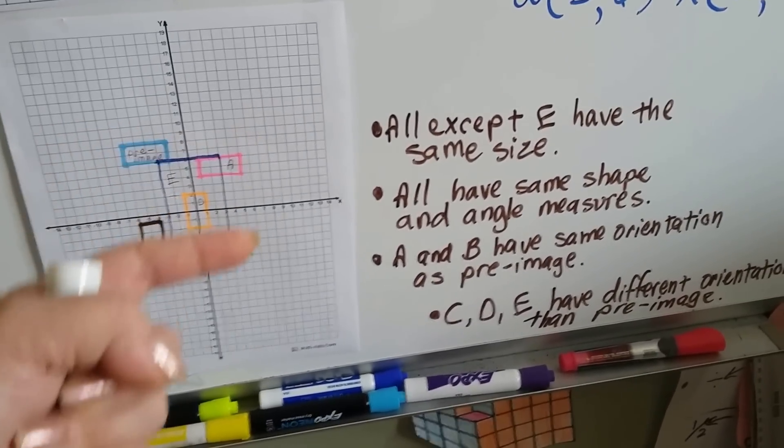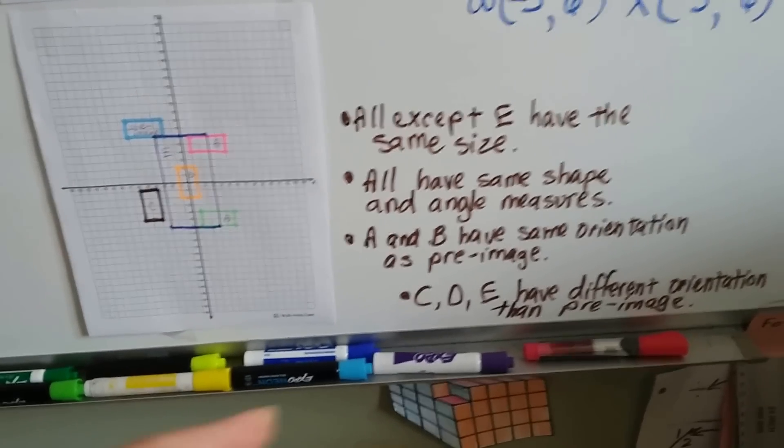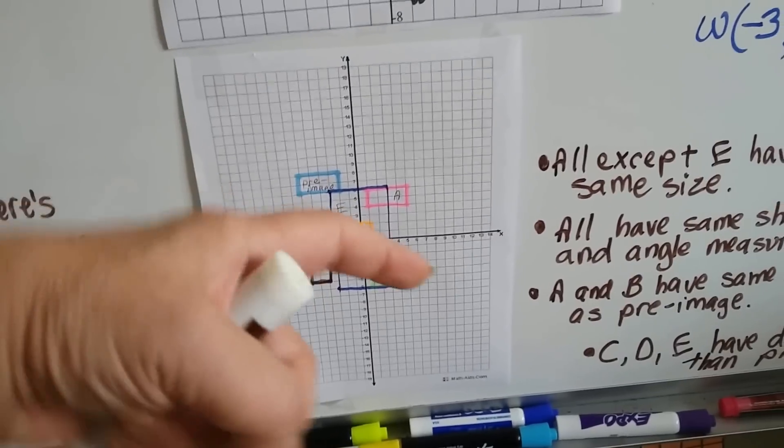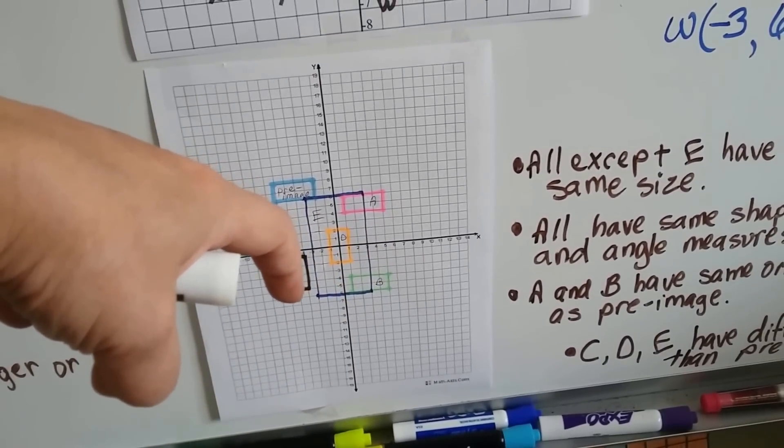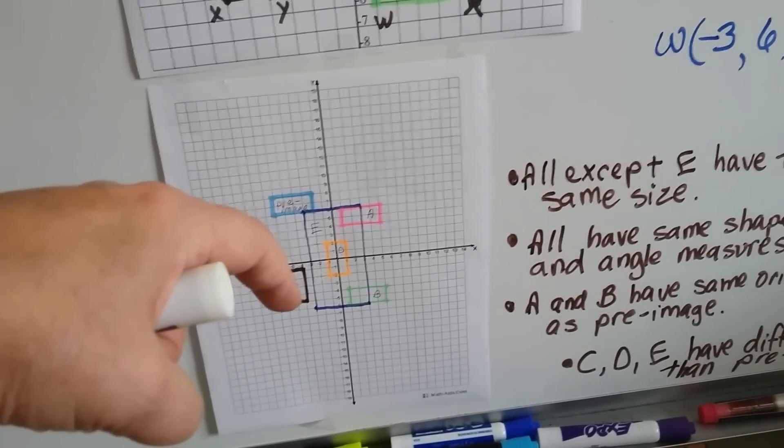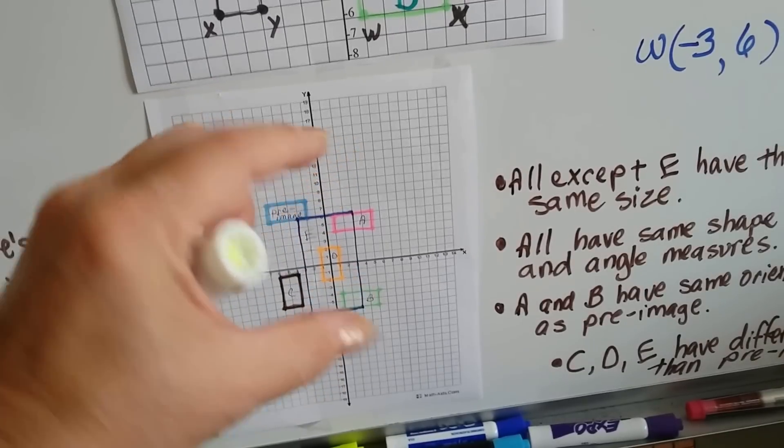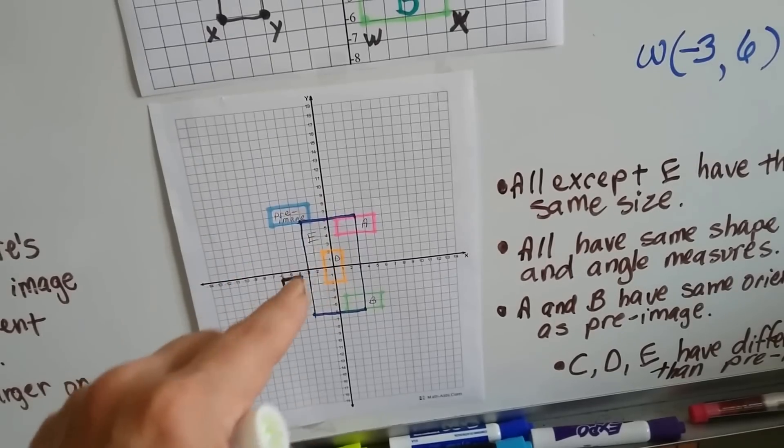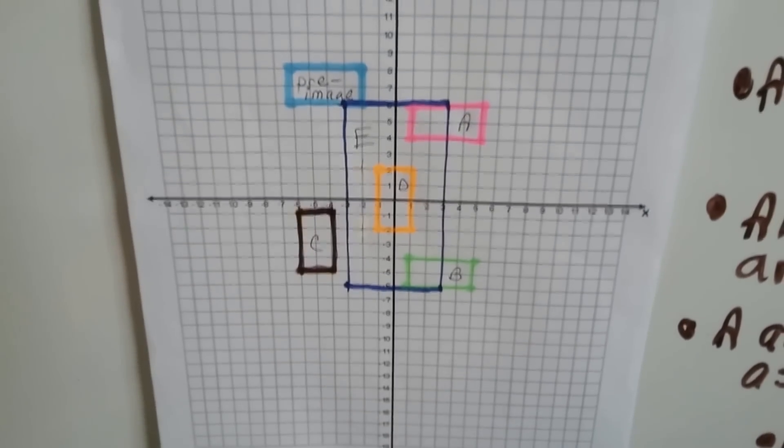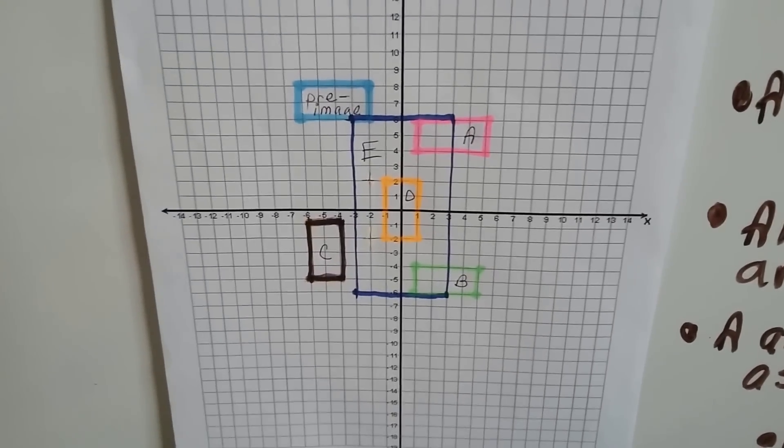And C, D, and E have different orientation than the pre-image because it rotated. So then C, this one right here, has a different orientation than the other ones. And D is the orange one right here. It just translated from the rotation. And this one, because it was an expansion and enlargement, it's got the same orientation. So C, D, and E all have the same orientation. But the pre-image and A and B are the same as each other because that was before the rotation.